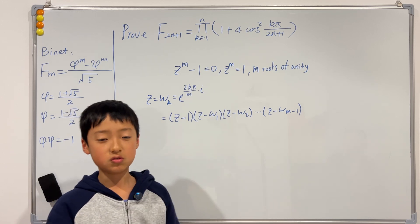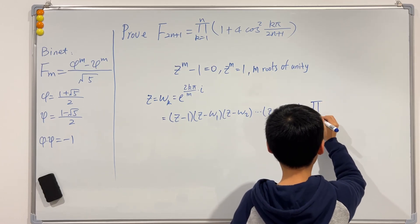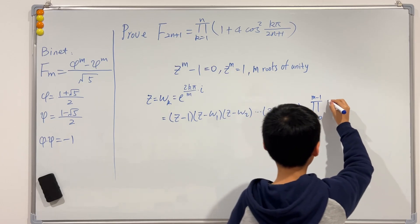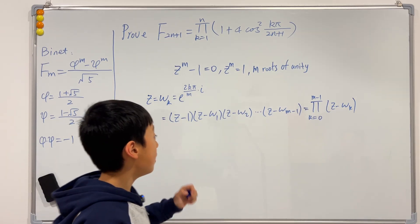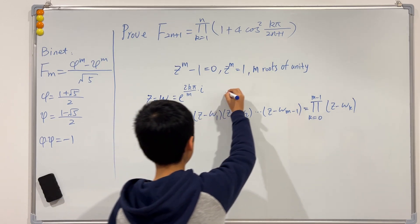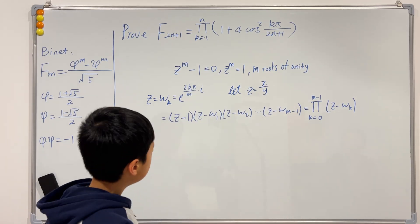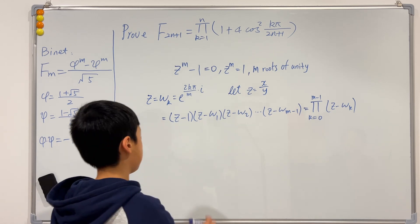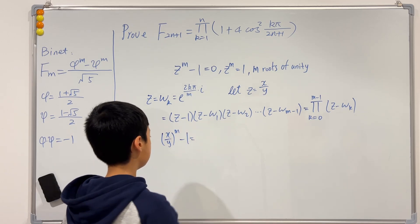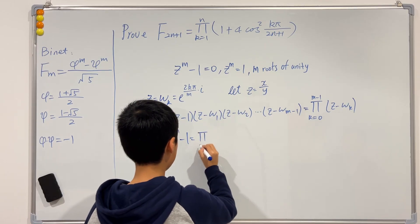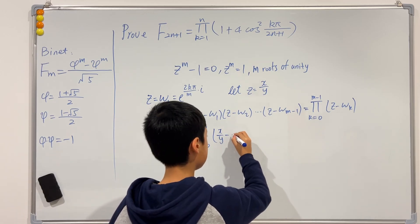We can write this in product (capital pi) notation: the product when k goes from 0 to m−1 of (z − ω_k). Now we're going to do a substitution — let z equal x over y. The left-hand side becomes (x/y)^m − 1, and the right-hand side is the product from k = 0 to m−1 of (x/y − ω_k).